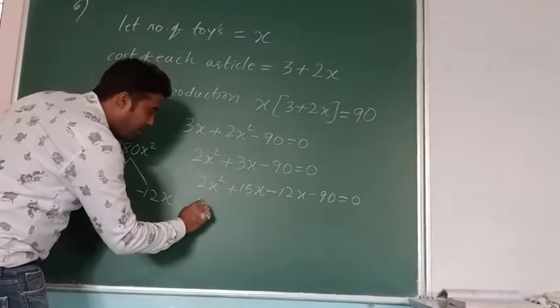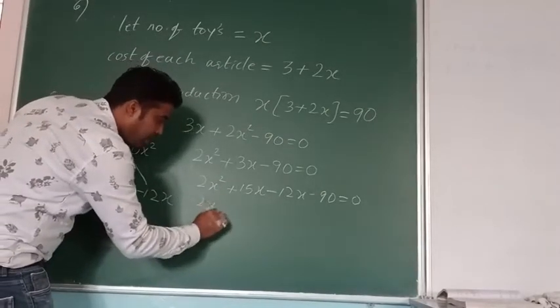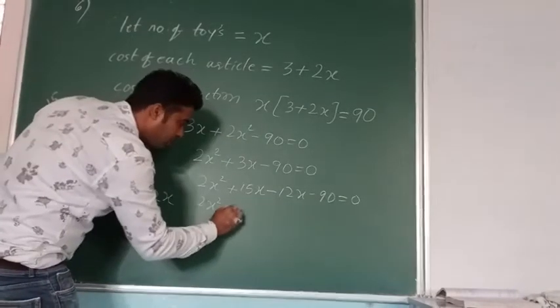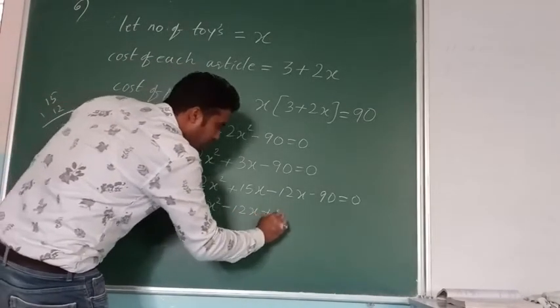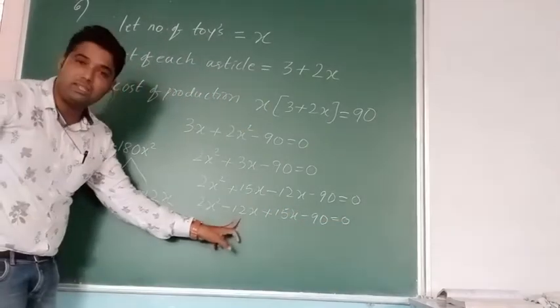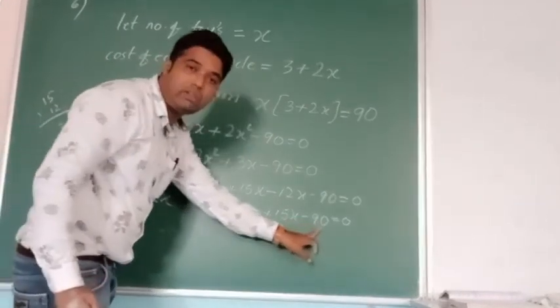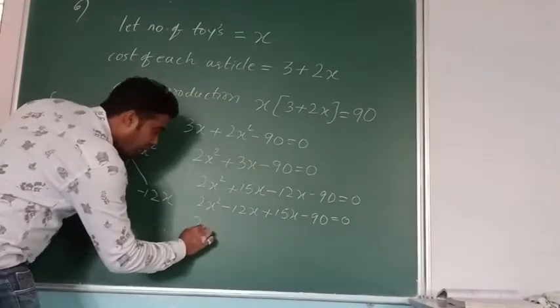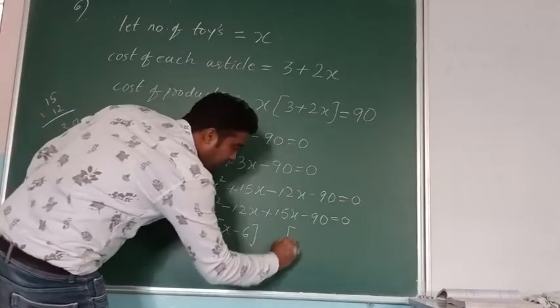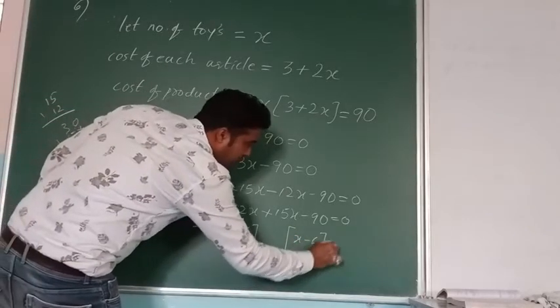While arranging, we should arrange in such a way that we can take common. This I will rearrange because 2 and 15 we cannot take common. You can take common from 15 and 90 easily. Now, 2x as a common inside x minus 6, leave some gap, then write x minus 6 equals 0.